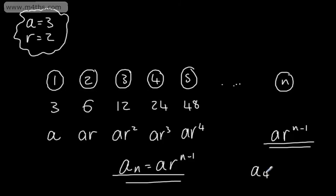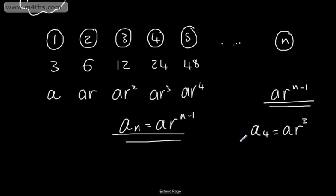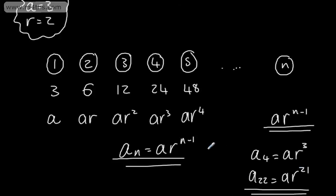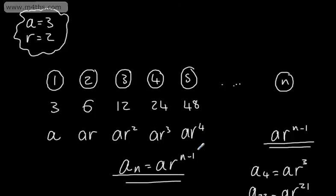For example, a sub 4 — and I say sub in terms of subscript — will be the first term multiplied by the ratio to the power of 3, and we can see this just here. If I have the 22nd term, that will be the first term multiplied by the ratio to the power of 21. This is often given in the formula book; you simply need to be able to use and apply it.